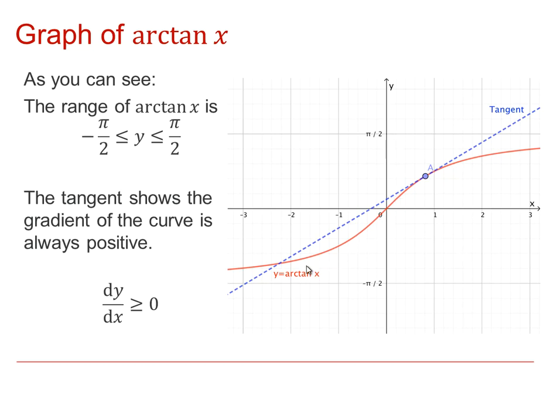So you can see this is the graph here. As x gets larger, then Arctan is approaching pi by 2 at the top end, and as x goes towards negative infinity, then Arctanx is approaching negative pi by 2. The other thing I'd like you to note is that at all points on this curve, the tangent is going to be positive, with its greatest value here at the origin.